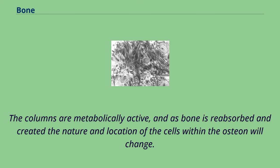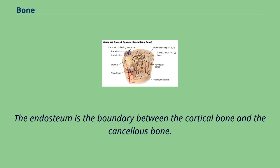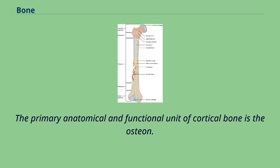Volkmann's canals at right angles connect the osteons together. The columns are metabolically active, and as bone is reabsorbed and created, the nature and location of the cells within the osteon will change. Cortical bone is covered by a periosteum on its outer surface, and an endosteum on its inner surface. The endosteum is the boundary between the cortical bone and the cancellous bone. The primary anatomical and functional unit of cortical bone is the osteon.